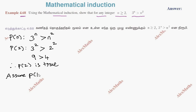Now assume P of k is true. That is, assume 3 to the power k is greater than k squared.